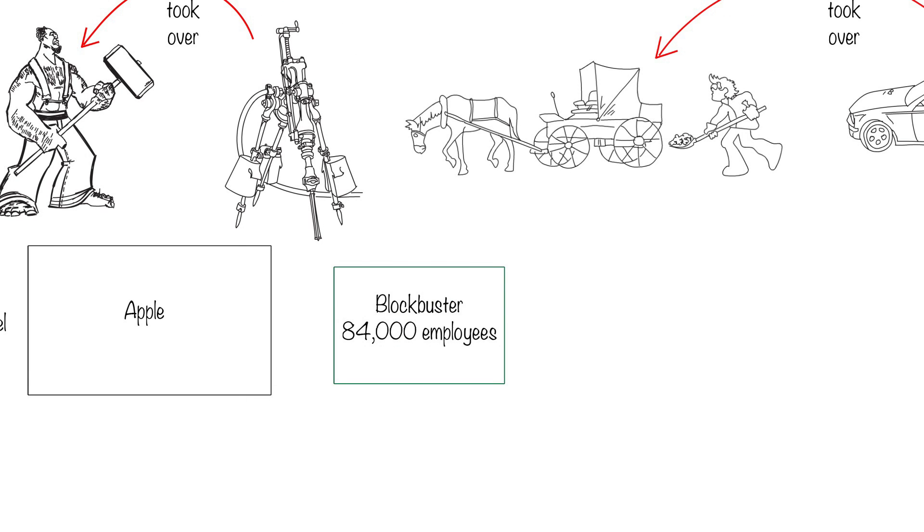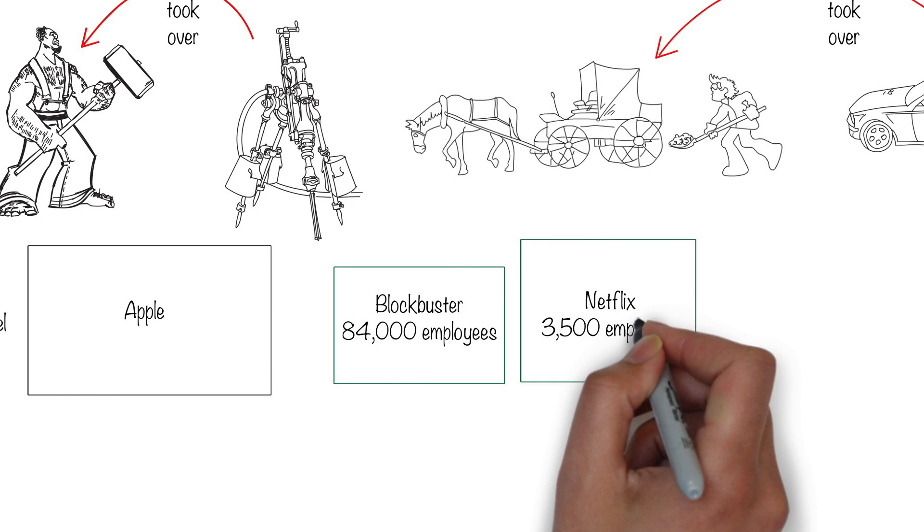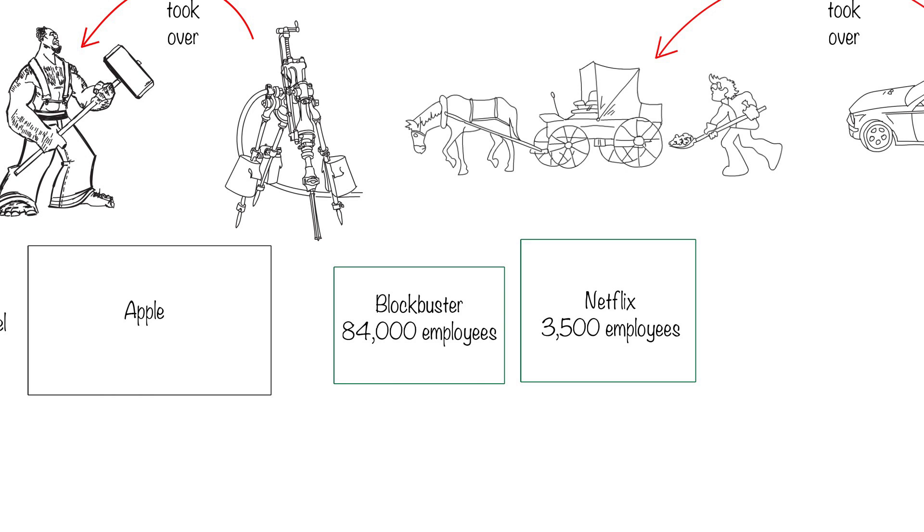At its height, Blockbuster had 84,000 employees. Netflix essentially replaced them with 3,500 employees who do a lot more. That's a factor of 24.